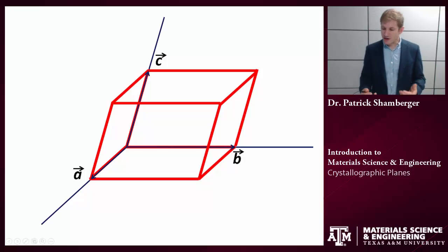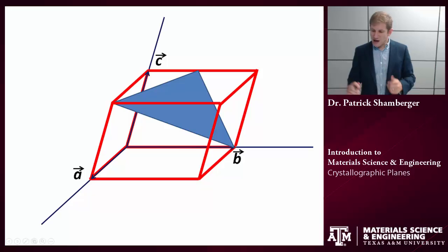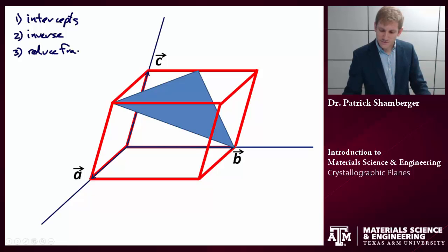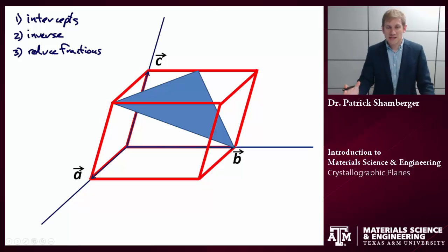We're going to start off with a general triclinic axis, so three lattice vectors, different lengths and not perpendicular to each other. And say I have this particular plane that I want to describe. So there are basically three steps that we need to do to index a plane. We need to look at the intercepts, we need to take the inverse, and we need to reduce any fractions.